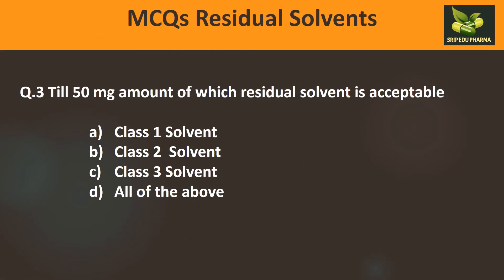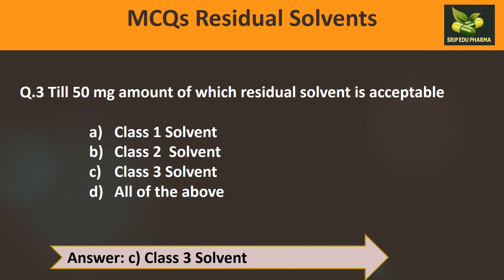Question 3: Up to 50 mg of residual solvent per day is acceptable for which class? A) Class 1, B) Class 2, C) Class 3, D) All of the above. For Class 2 the limit is around 10 mg, but for Class 3 it is up to 50 mg. Therefore the answer is C: Class 3.